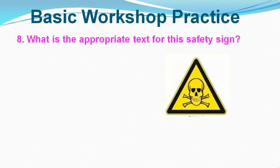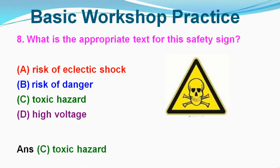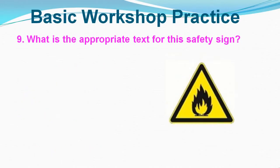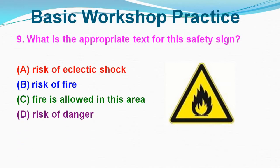Question No. 8: What is the appropriate text for this safety sign? Option A: Risk of Electric Shock, Option B: Risk of Danger, Option C: Toxic Hazard, Option D: High Voltage. Correct answer is Option C, Toxic Hazard. Question No. 9: What is the appropriate text for this safety sign? Option A: Risk of Electric Shock, Option B: Risk of Fire, Option C: Fire is Allowed in this Area, Option D: Risk of Danger. Correct answer is Option B, Risk of Fire.